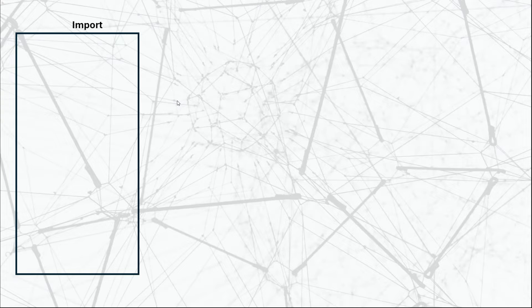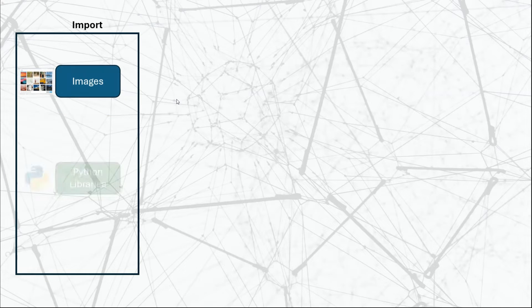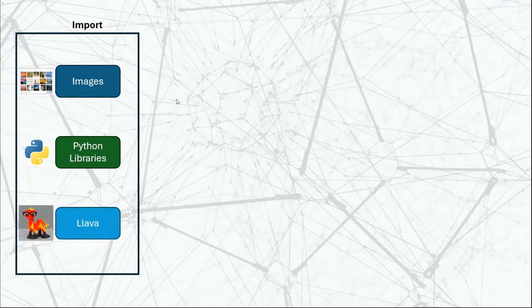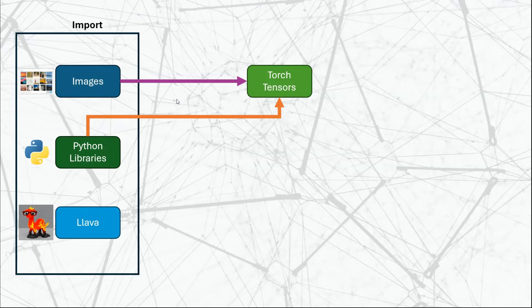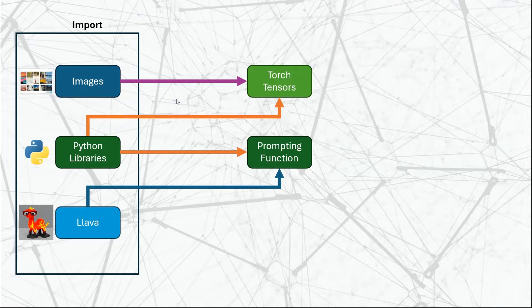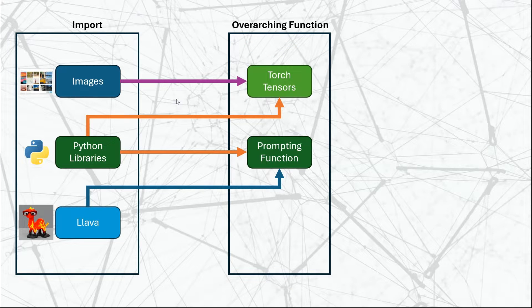The architecture of the system relies on the following: we're going to be importing a number of items — images, Python libraries, and the LLaVA large language model and visual assistant. The Python libraries are going to enable the conversion of images into PyTorch tensors. Alongside the imported LLaVA model, they will enable us to create a prompting function which converts the prompt into a format understood by the model, and then we can embed the sub-functions into a main overarching function.